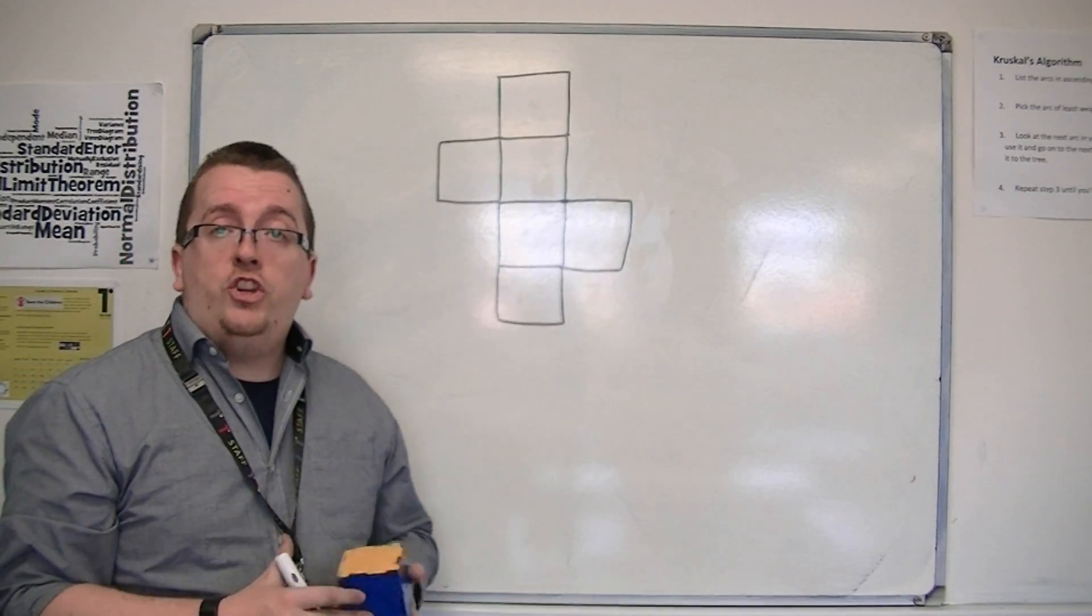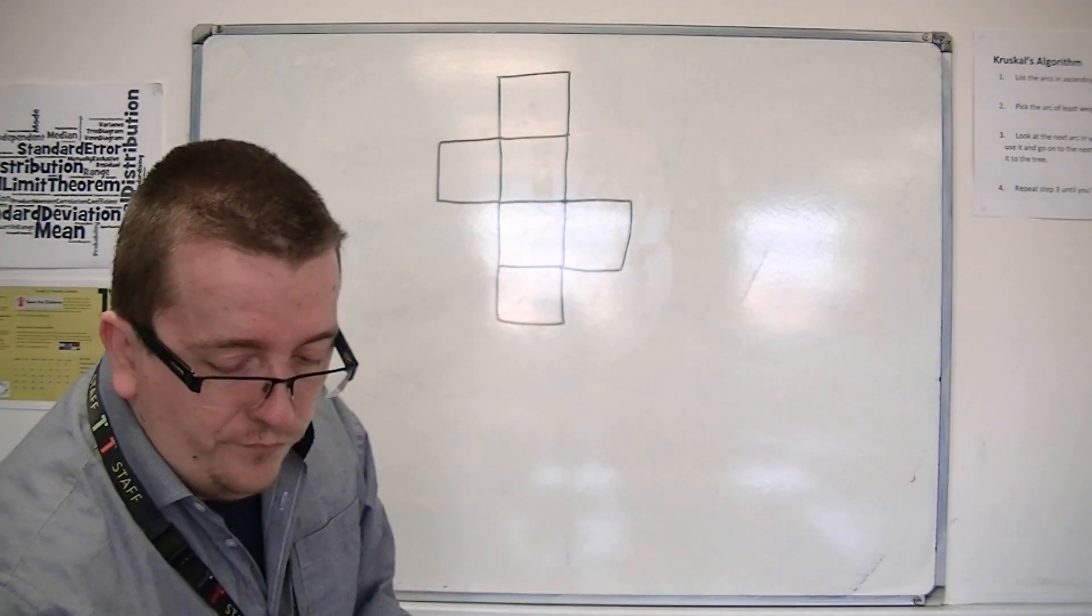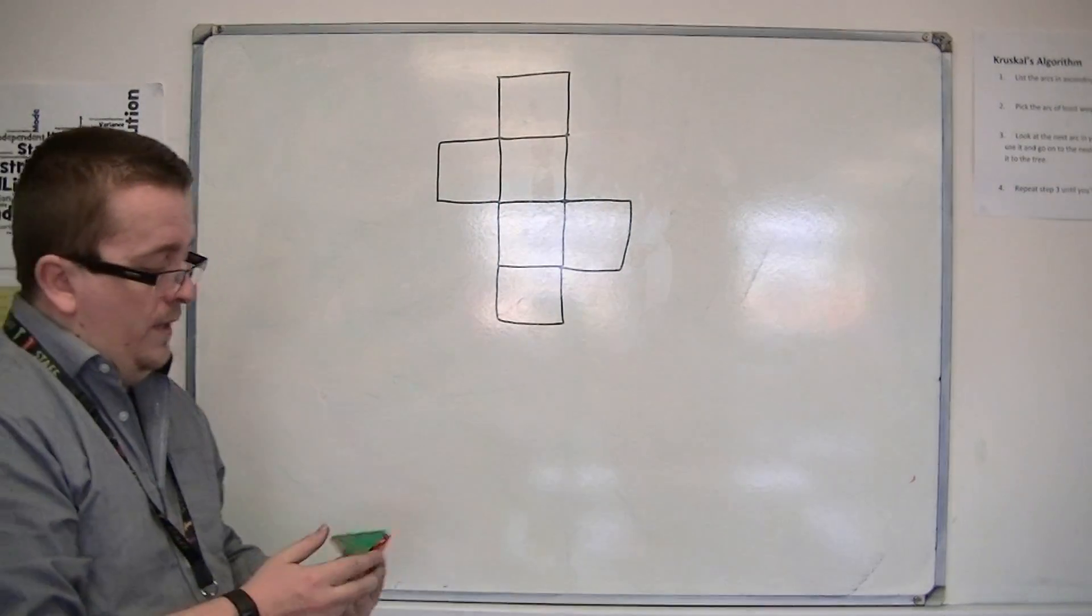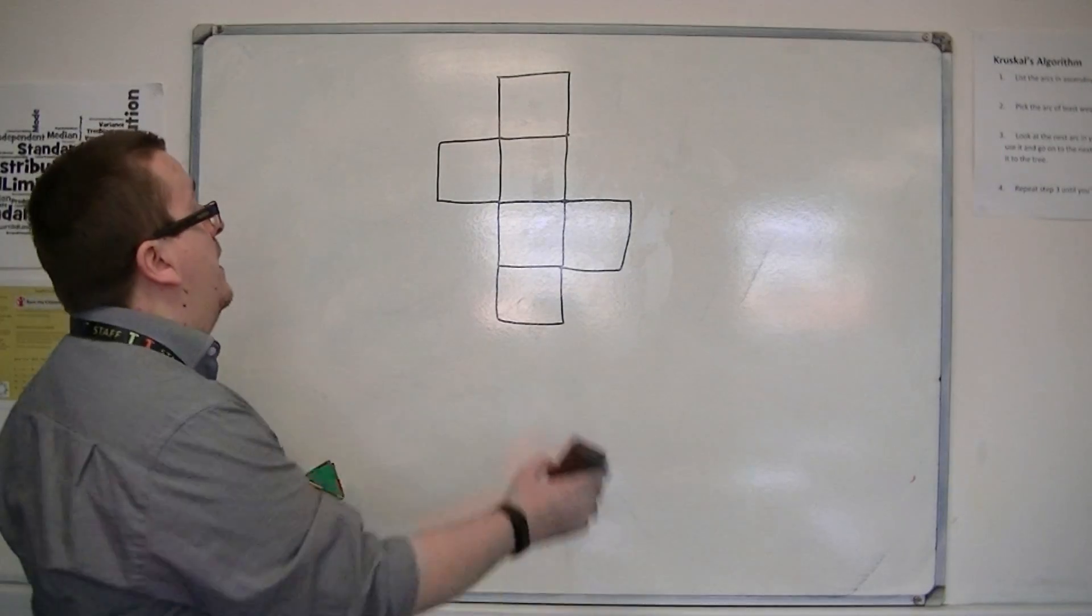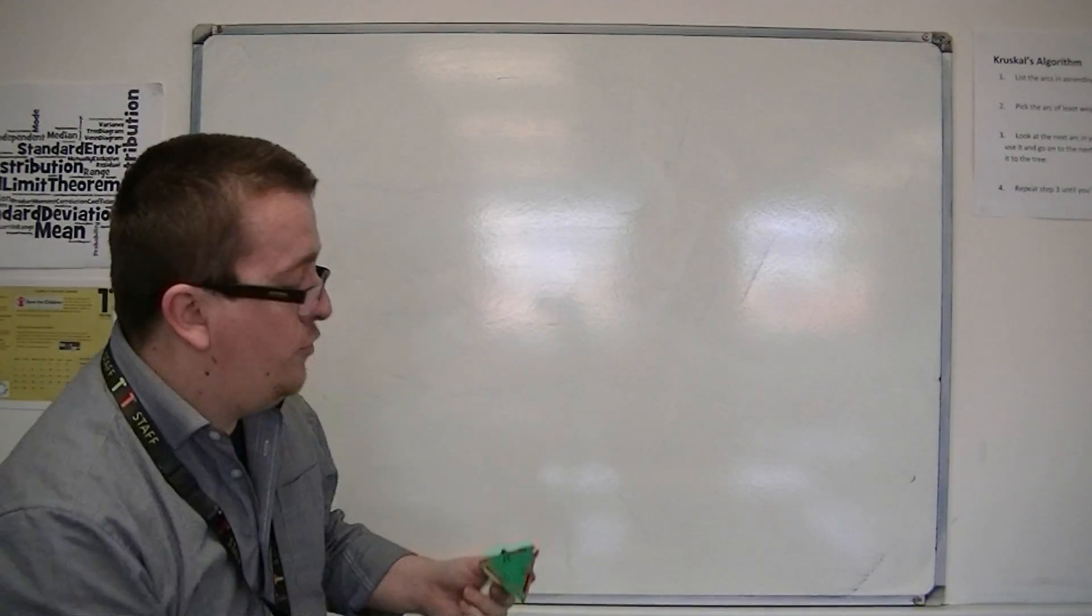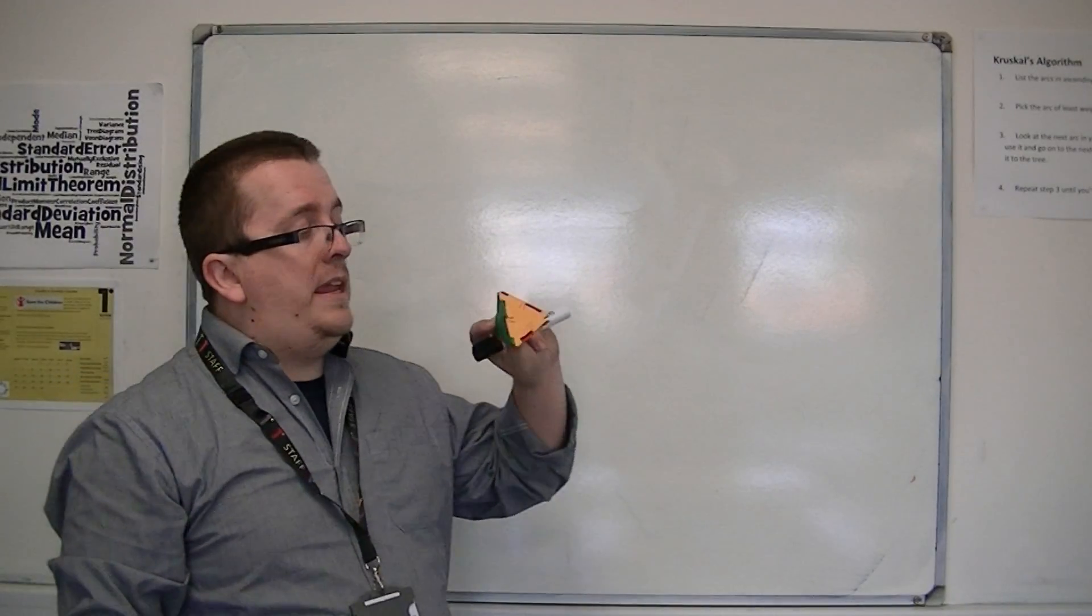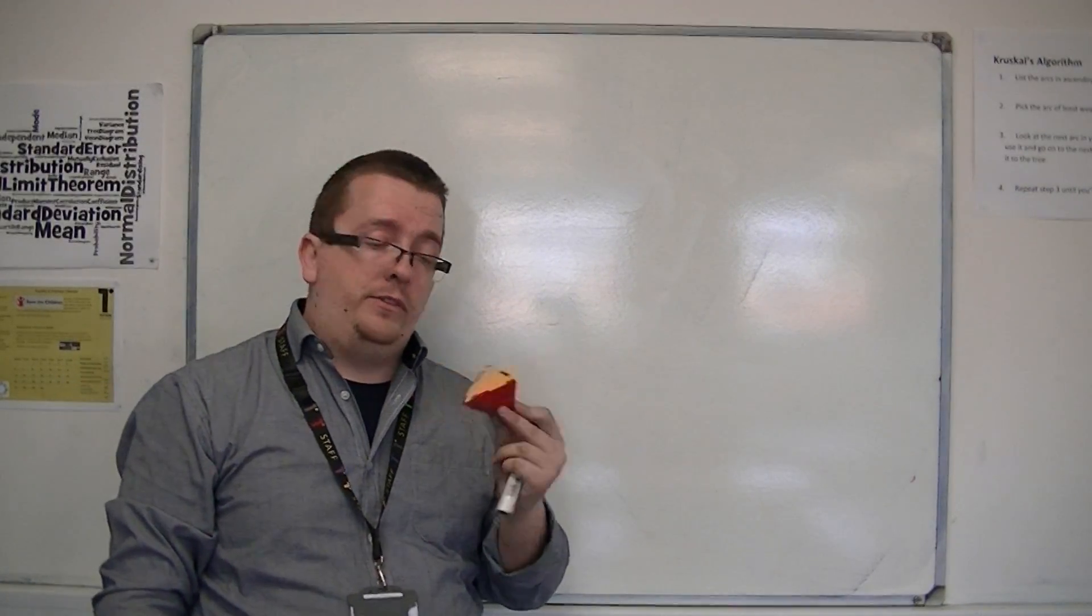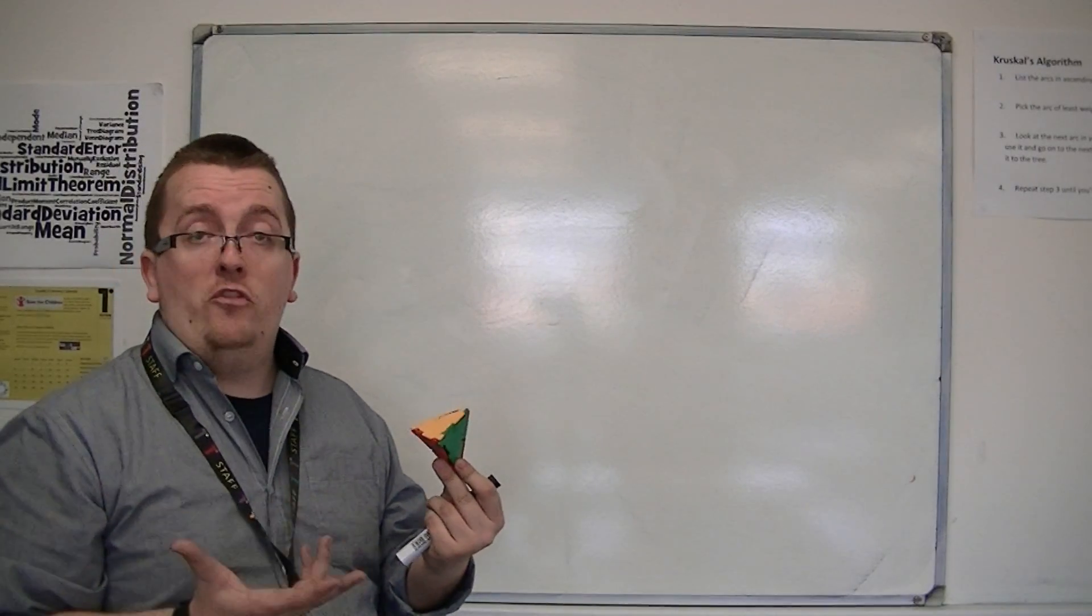But that's not the only shape that we look at. You could look at, for example, a tetrahedron. So we introduced the tetrahedron in an earlier video. So the tetrahedron was a shape, a 3D shape, with four triangular sides, kind of like a triangular-based pyramid.